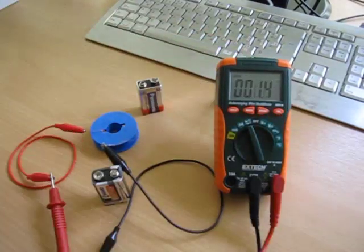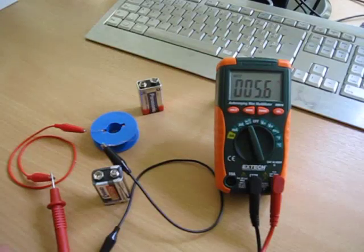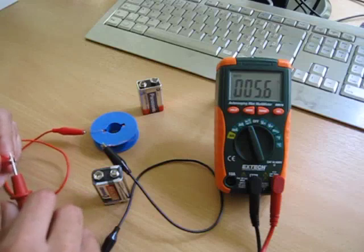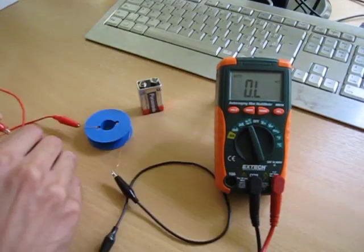We measure a resistance of about 5.6 ohm. Now let's put some current through this coil. We have to go to 10 Amperes current test.